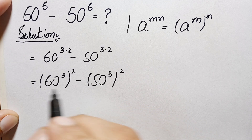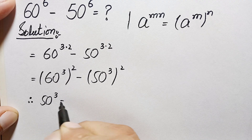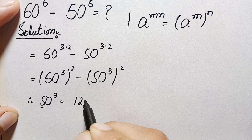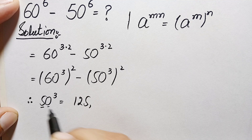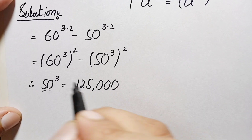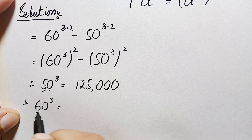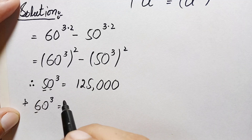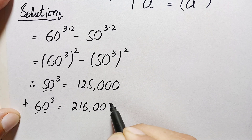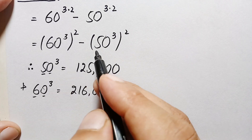Our next target is to find the value of 50 cubed and 60 cubed. 50 cubed: 5 cubed is 5 times 5 is 25, 25 times 5 is 125, and there are three zeros, so 50 cubed is 125,000. Now for 60 cubed: 6 times 6 is 36, 36 times 6 is 216, and we write three zeros, so 60 cubed is 216,000.